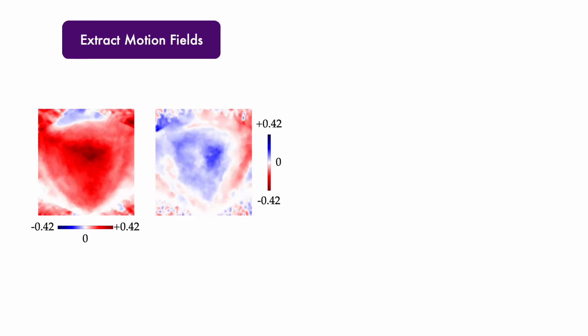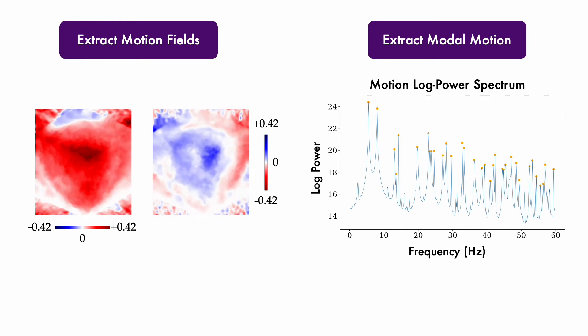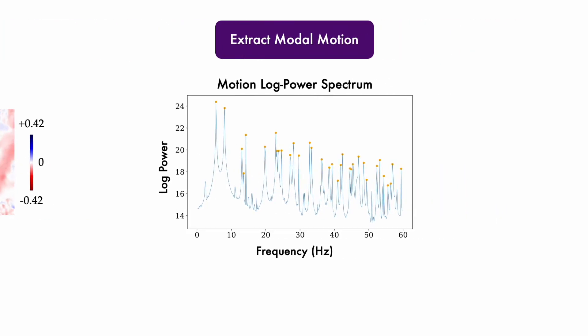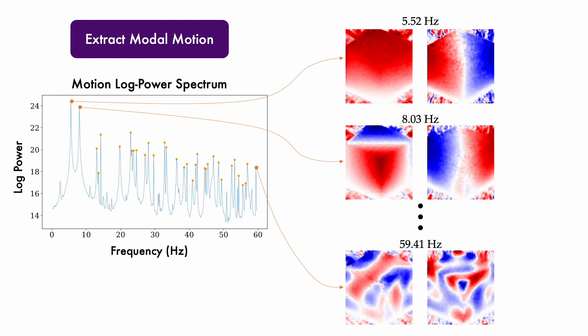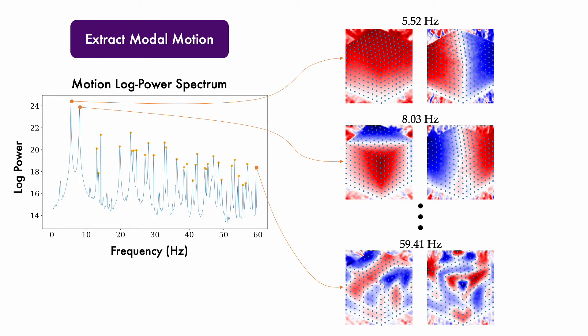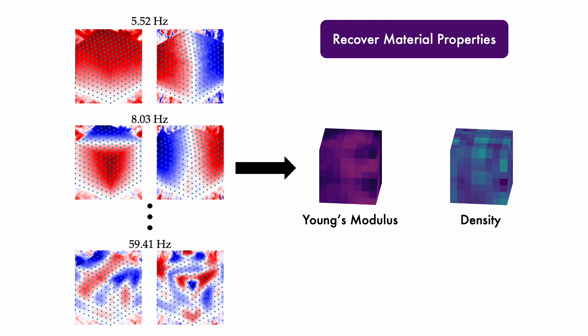We expect image space modes to correspond to peaks in the log power spectrum of motion amplitude. Once we've identified the image space modes in the video, we sample each visible mesh vertex at its corresponding location in the image. These sampled 2D image space modes are the inputs to an optimization procedure that estimates the spatially varying Young's modulus and density values.